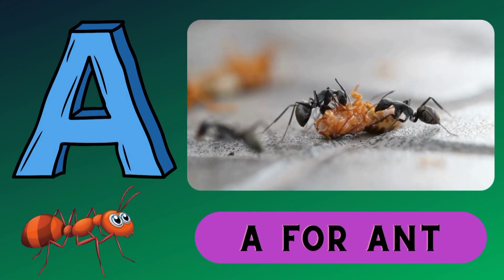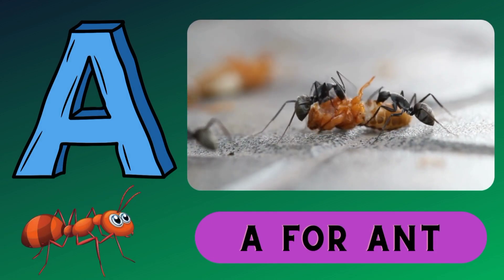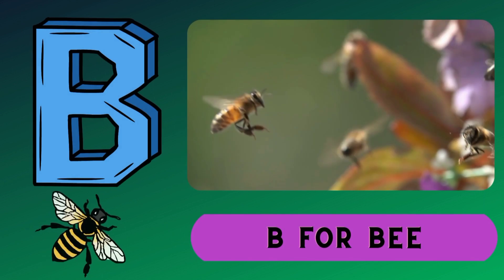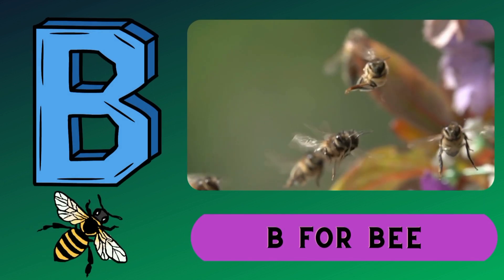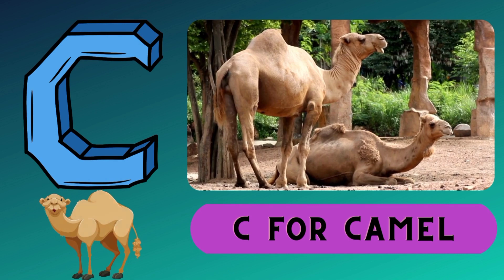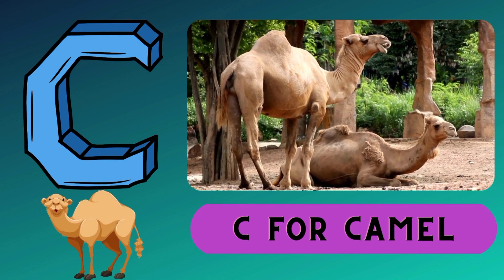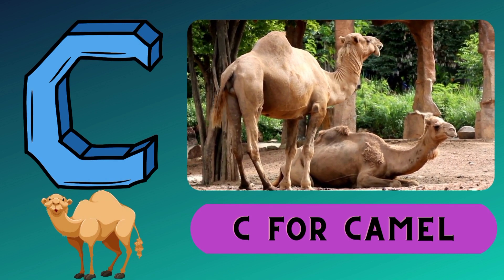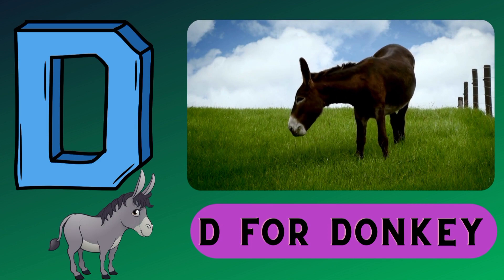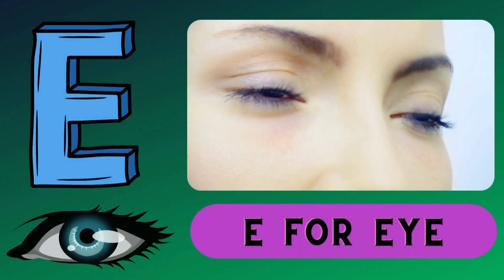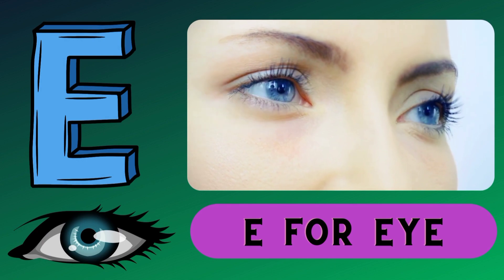A. A for Ant. B. B for B. C. C for Camel. D. D for Donkey. E. E for Eyes.